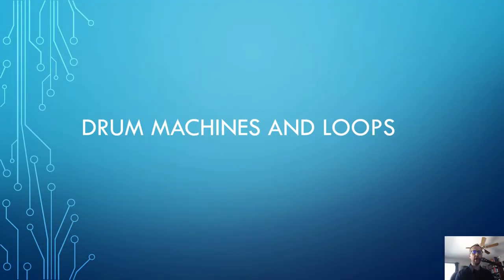Hello, MUS1002 students. In this video, we are going to explore the history of drum machines and define how loops work. As with the history of synth videos, I am not including any links to audio samples because I don't want this getting flagged by YouTube's content ID. Please refer to the chapter in your book, which has hyperlinks to examples on Spotify that you can listen to for free without copyright infringement issues.